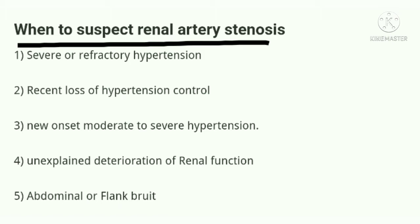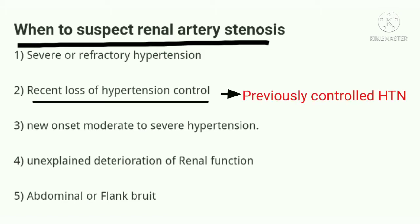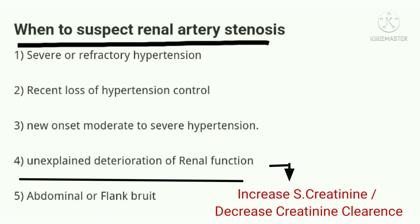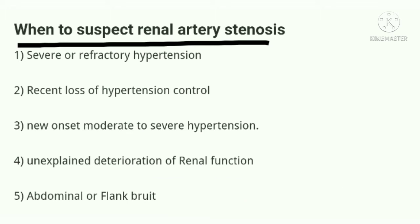The second condition in which we have to suspect renal artery stenosis is recent loss of hypertension control — meaning a patient who had controlled blood pressure on medication, but suddenly blood pressure shoots up on the same medication. The third one is new onset moderate to severe hypertension, mostly in the younger age group. The fourth one is unexplained deterioration of renal function, meaning an increase in serum creatinine or decrease in creatinine clearance.